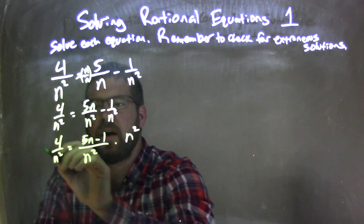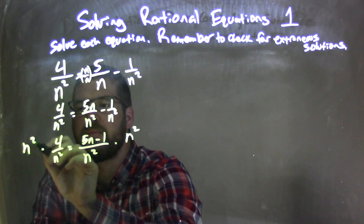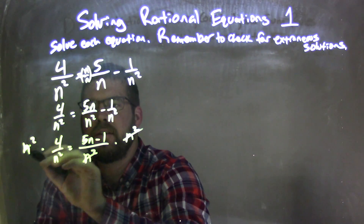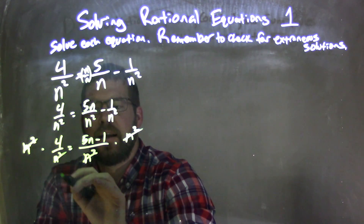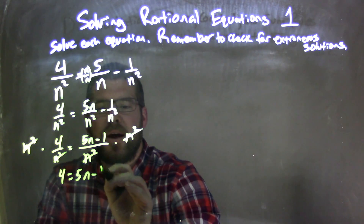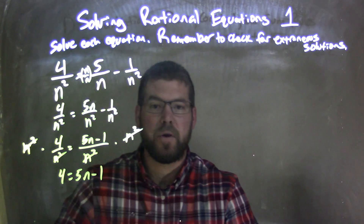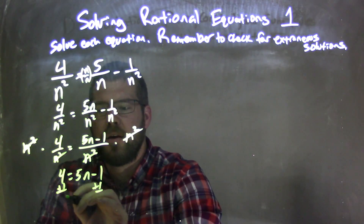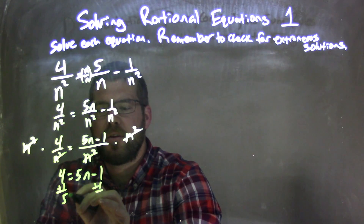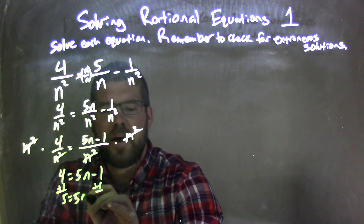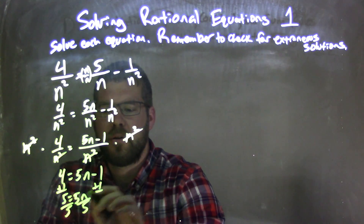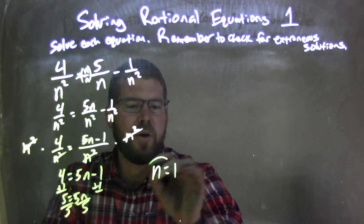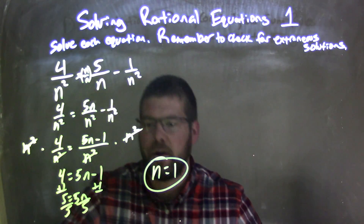Multiply now n squared to both sides, eliminating the n squareds on both sides. These n squareds get eliminated. Now I have 4 equals 5n minus 1. Pretty easy to solve now — add 1 to both sides: 5 equals 5n. Divide by 5, and rewriting it: n equals 5 divided by 5, which is just 1.